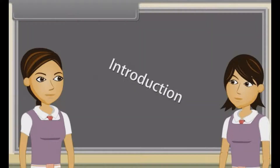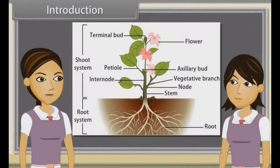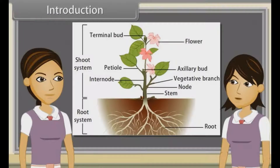When we observe a plant, we see that every plant has roots, stem and leaves. Plants also have flowers and fruits. We have already discussed characteristics, types, modifications and functions of roots. Now we will study stem.